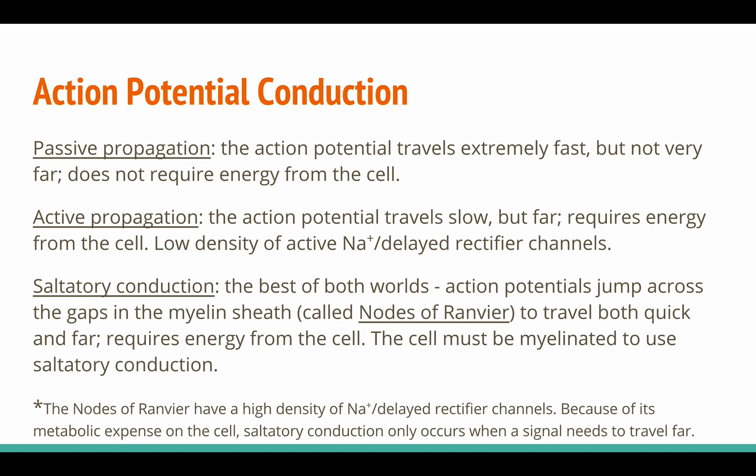Saltatory conduction is the best of both worlds. Action potentials jump across the gaps in the myelin sheath, called the nodes of Ranvier, to travel both quickly and far. This process requires energy and the axon must be myelinated. It is possible because the nodes of Ranvier have a high density of sodium and delayed rectifier channels. However, due to its metabolic expense, saltatory conduction only occurs when a signal needs to travel far — such as when a dorsal root ganglion cell sends sensory information from the tip of your finger up to the brain.